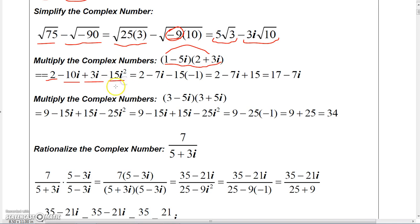Now I can combine these two terms: -10i + 3i is -7i. So I have 2 - 7i, but then i². Remember, i is the square root of -1, so i² would just be -1.